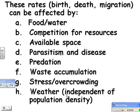And then you have what's called density-independent population factors. Weather would be one of those. So if it got really cold one year, it wouldn't matter whether you had a lot of deer or a few deer — all of the deer would be affected the same, and more of them would probably die.